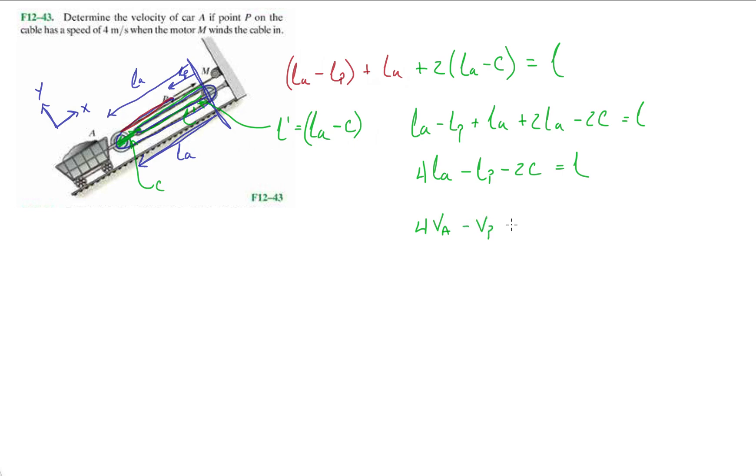That's constant, so the derivative yields zero. The rope is constant, the length of the rope is constant, so the derivative will yield zero. Then we have 4VA equals VP. The way I arranged my coordinate system, I said x going to the right is positive.